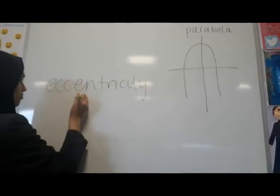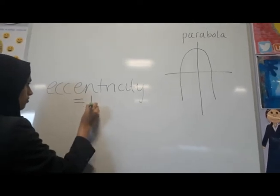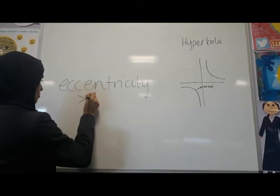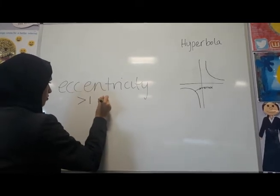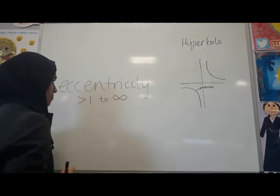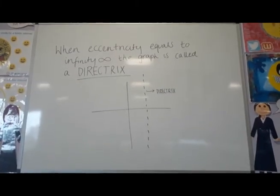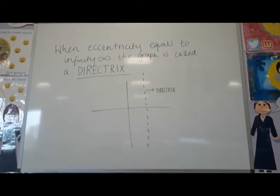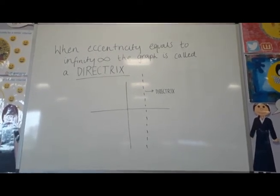An eccentricity of one indicates a parabola. An eccentricity greater than one indicates a hyperbola. When eccentricity equals infinity, the graph is called a directrix. This is a vertical line perpendicular to the horizontal axis.